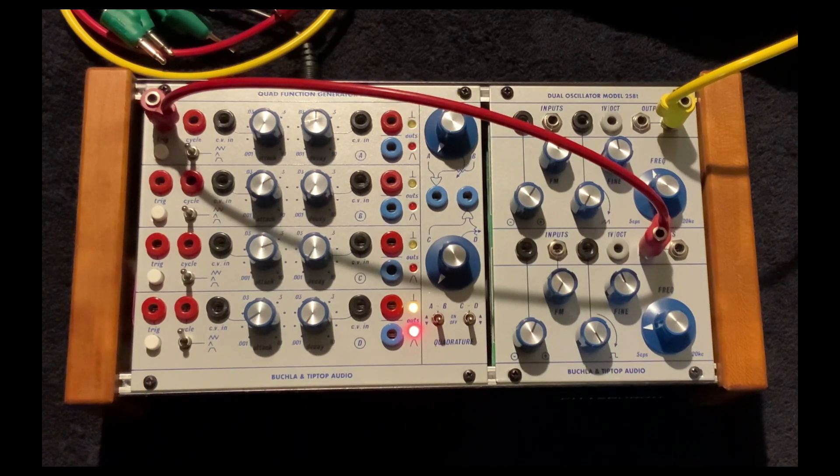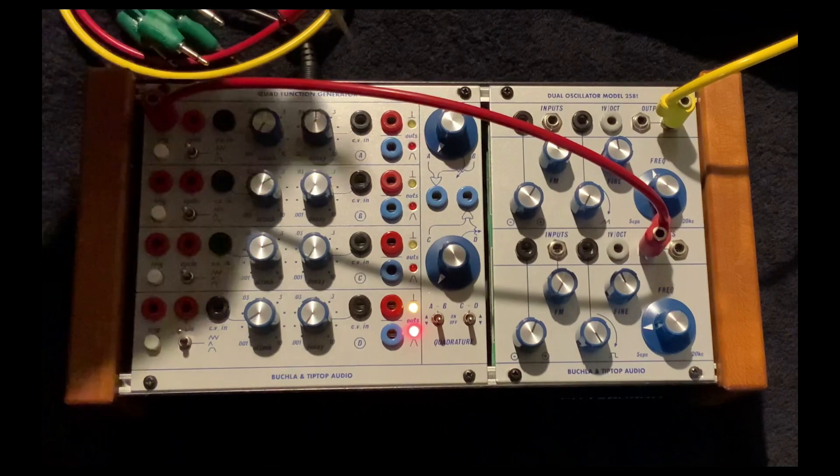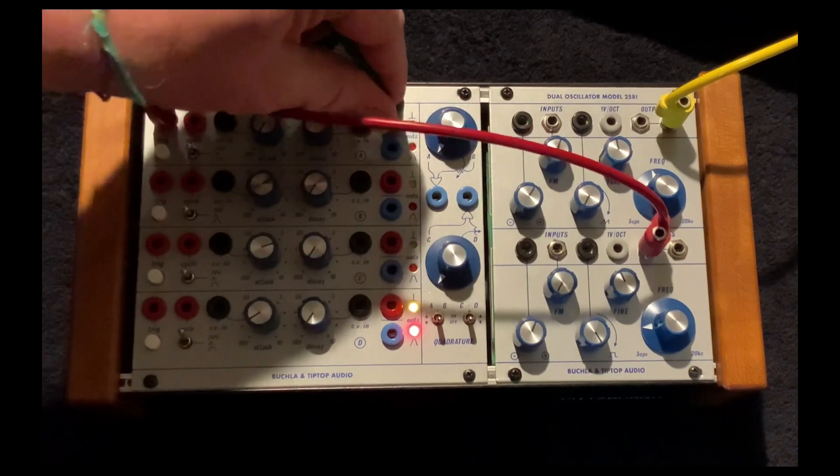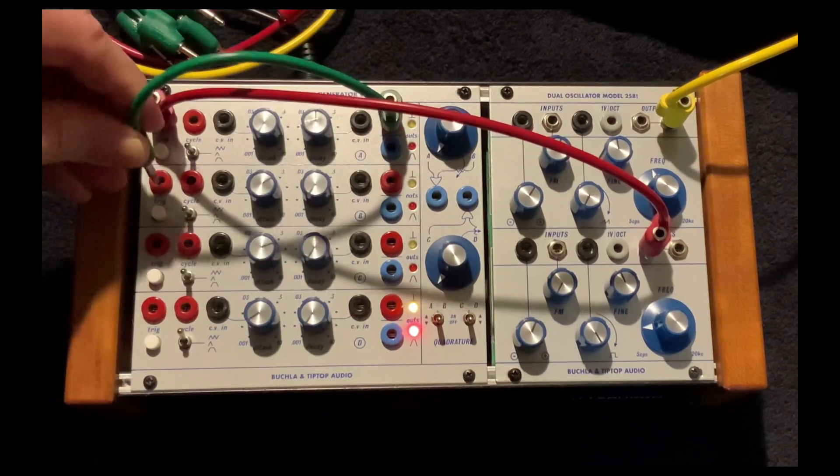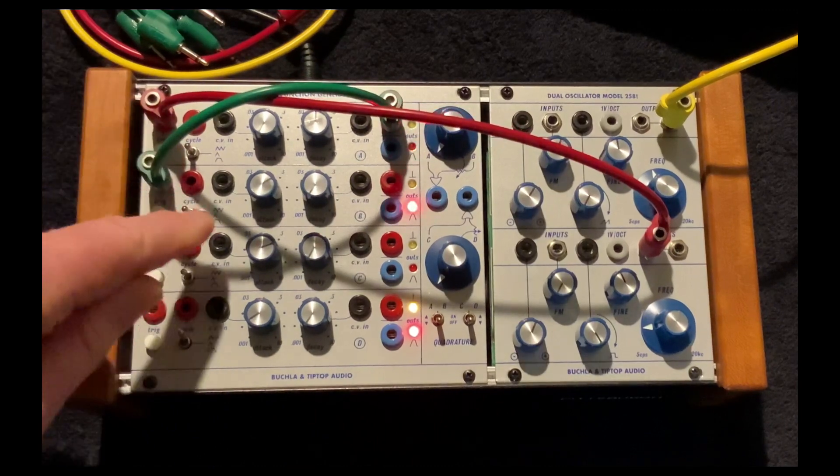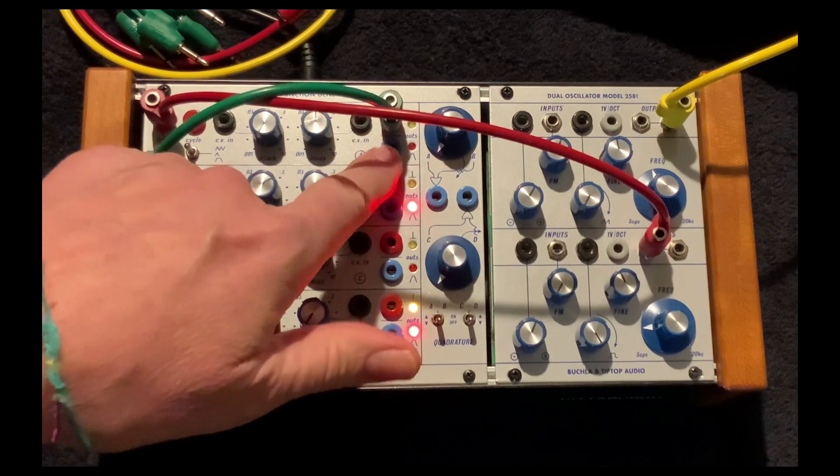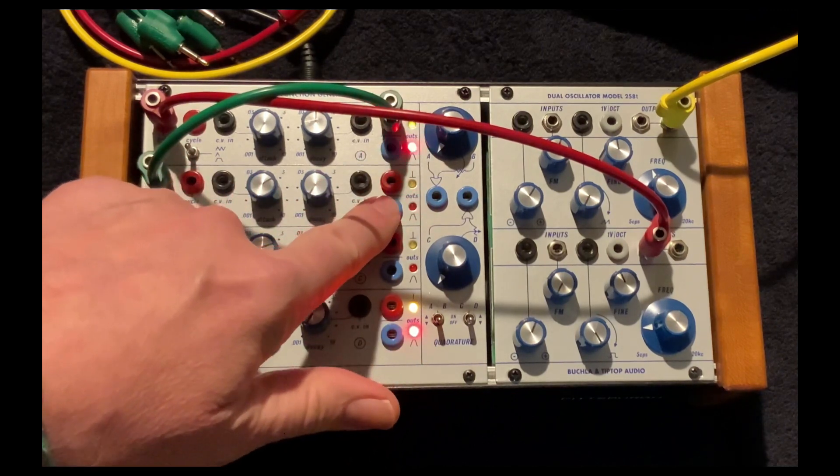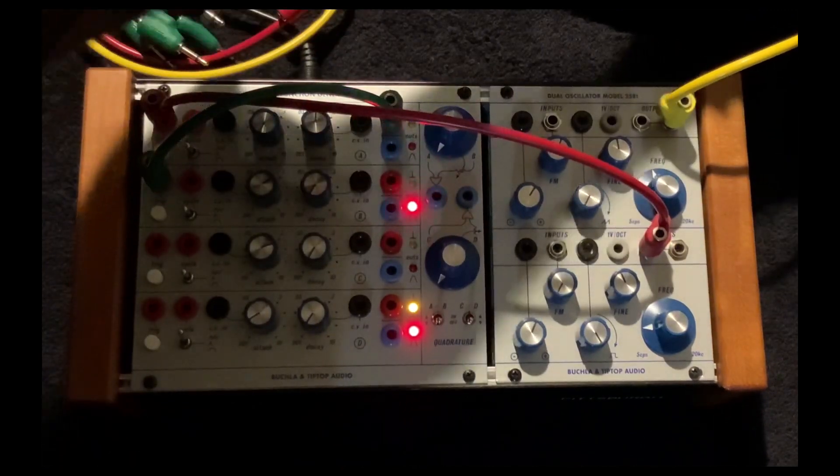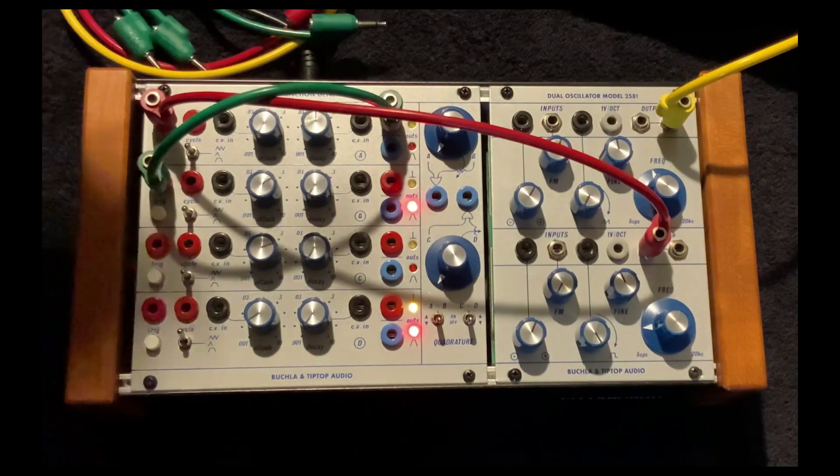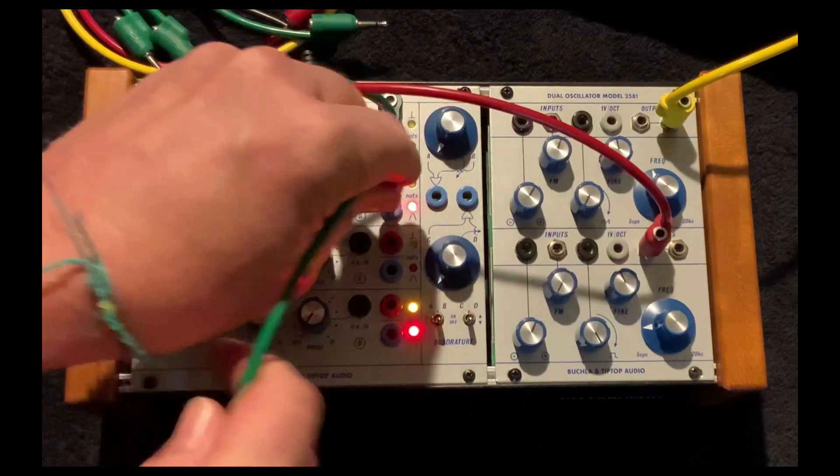And by cascading these we can sort of get like a clock divider thing going. So this is going at a fast rate but if I go down and use that to trigger the second one I can have a slow attack and now we have a subdivision. And I can send that subdivision to the wave shape.